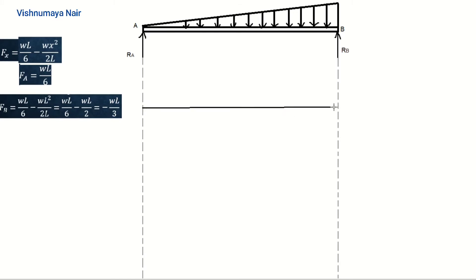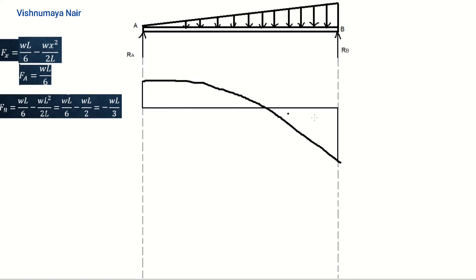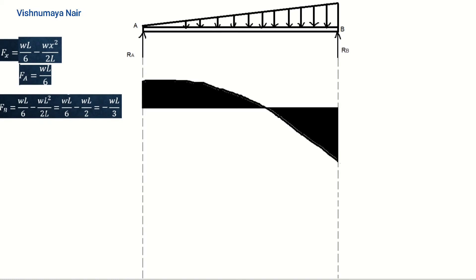Let's draw the shear force diagram. First we draw the baseline. At end A, shear force equals plus WL/6, so we mark it above the baseline. At end B, shear force equals minus WL/3, so we mark it below the baseline. We join these two points using a parabolic curve, since shear force is proportional to the square of the distance from end A — it varies according to parabolic law. We shade these two regions and mark them as positive and negative.